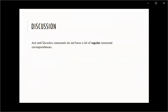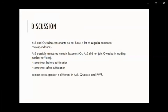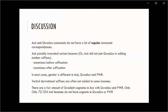So what have we seen so far? Asa and Kwadza consonants do not have many regular consonant correspondences. Asa words are often shorter than Kwadza words — either Asa truncated lexemes, or did not add the same morphological suffixes as Kwadza. In most cases gender is not the same in Asa, Kwadza, and Proto-West Rift. The verbal derivational suffixes are often not added to the same lexemes. And lastly, there is a fair amount of cognates from the Swadesh list between Asa, Kwadza, and Proto-West Rift — in fact only 72 of the 334 Asa words have no cognate at all, though many only have one in either Kwadza or Proto-West Rift.